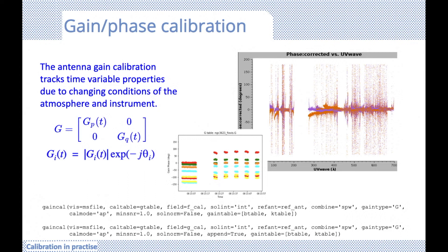The observations of the phase calibrator will be interspersed with the target observation within a 15-degree radius for local conditions. A direct consequence of this close-proximity requirement may be that secondary calibrators are not as tight a point source as primary calibrators — they may be partially or fully resolved, in which case we use a model. You may see in calibration that you first have to calibrate your phase calibrator to derive a model before using it as a gain calibrator to calibrate your target.